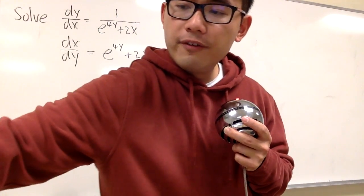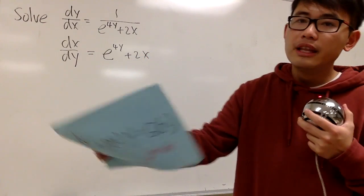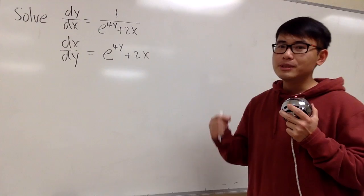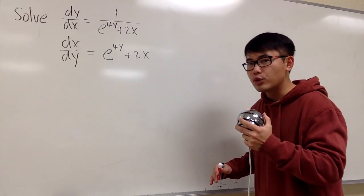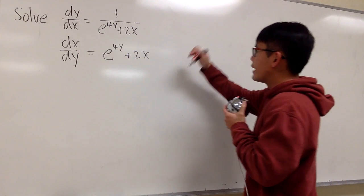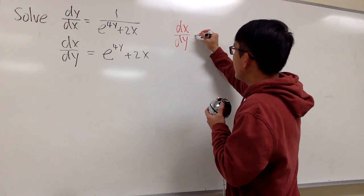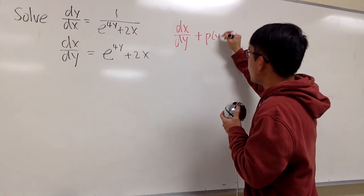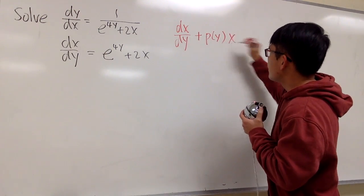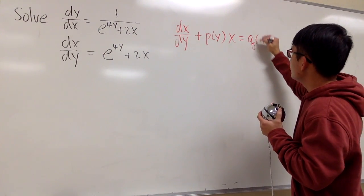So instead of the general form we usually deal with dy/dx like this, let me write this down for you guys. This will be the linear equation in terms of x being the dependent variable, and y is the independent variable. So right here, we are looking at this as dx/dy, and I want to add it with p(y). Okay, this does not match, and I want to have the x right here.